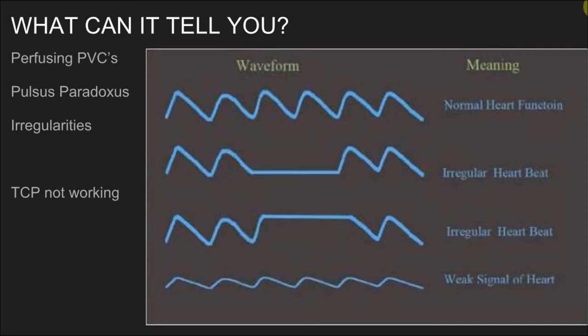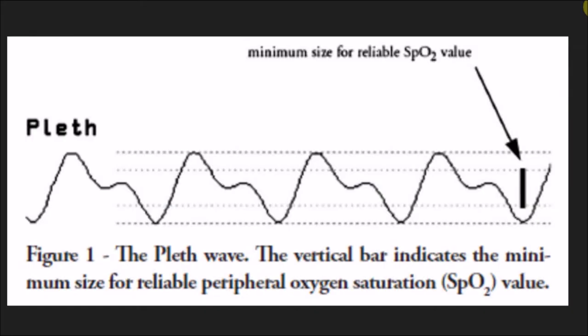No matter how fast I set an auto cuff on a monitor or how well I'm taking a manual blood pressure in an ambulance, I very often wish I had blood pressures every second. One of the ways you can kind of get that is through pleth. I know it's not the same thing and it's not as reliable, but it is showing you how well your patient is possibly perfusing, or at least how well the blood is circulating. Some monitors even have little guideline markers built in.